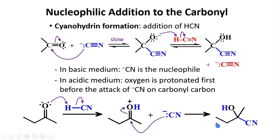Now, which one is better? It is important to note that this involves prussic acid, which is rather toxic. It is common for this type of reaction to use potassium cyanide in the presence of catalytic sulfuric acid to bring the pH to about 4 to 5. In that case, potassium cyanide is easier to handle.